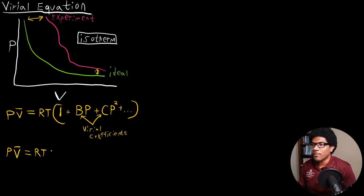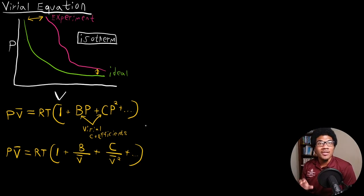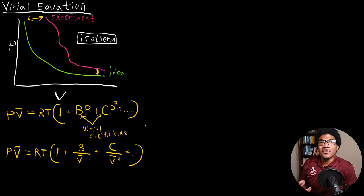So what that expansion would look like: you would still have one here, plus B over V̄ — that would be the linear term in one over V̄ — plus C over V̄ squared, plus dot dot dot, however long you want to extend that series. As a practical note, for most practical purposes we usually truncate at the second or third term — that is, at the linear or quadratic term.